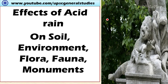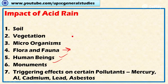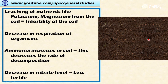Welcome. In this video, let's learn about the effects of acid rain. Acid rain can impact the ecosystem and its components in an adverse way, including soil, vegetation, microorganisms present in the soil, and flora and fauna — that is, plants, animal life, human beings, and monuments. Various triggering effects are caused by acid rain, including the release of pollutants like mercury, aluminum, cadmium, lead, and asbestos into the ecosystem.